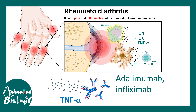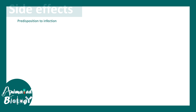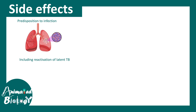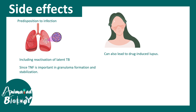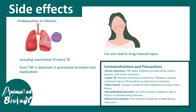There are many side effects because many of these TNF-alpha blockers predispose the body towards infection. For example, if you have an underlying condition of latent TB, the TB might come back, because TNF-alpha is important for granuloma formation. It can also lead to drug-induced lupus. So keeping all these factors in mind, there are certain contraindications and precautions one has to take before prescribing these kinds of medications.